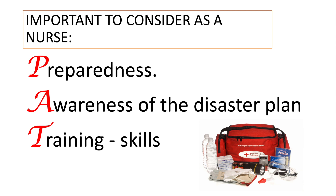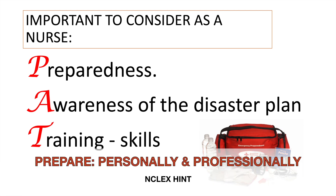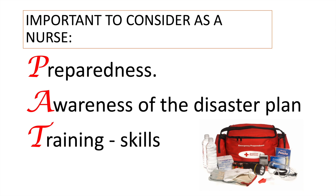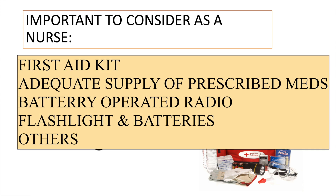Preparedness means being prepared personally and professionally. You need to make sure you have emergency plans and supplies, prepare the emergency room and crash cart, plan for a meeting with your team, identify where to go if evacuation is necessary, determine when and how to turn off water, gas, and electricity at main switches, and locate the safe spot in your home or unit. In the community, be prepared with first aid kits, clothing, blankets, adequate supply of prescription medications, battery-operated radio, flashlight, and batteries.